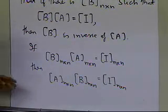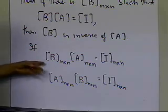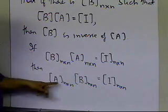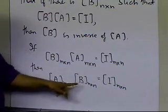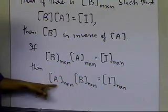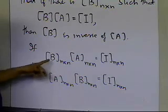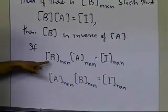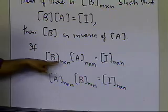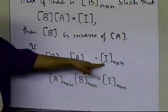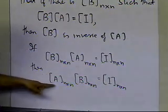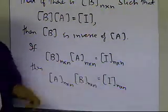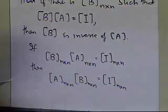Many times in some books, people say B times A equals the identity matrix equals A times B, in order to show that B is the inverse of A. But that's not what you have to do — all you have to show is that B times A is the identity matrix, and then it can automatically be proven that A times B will also be the identity matrix.